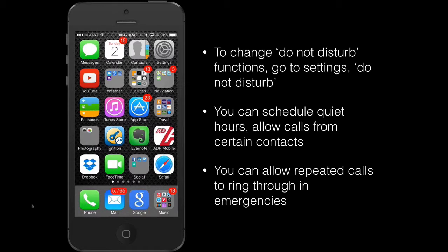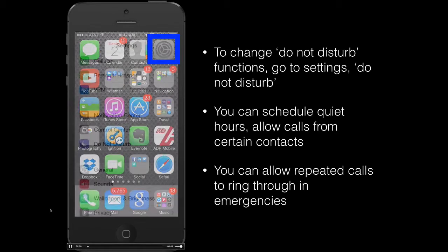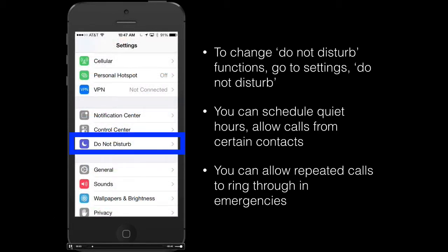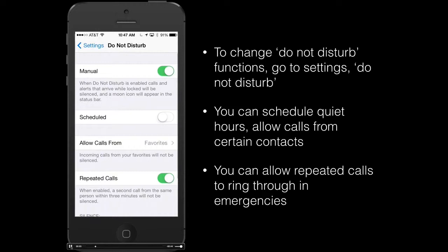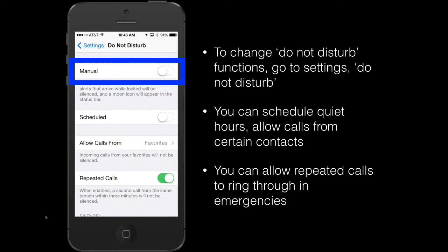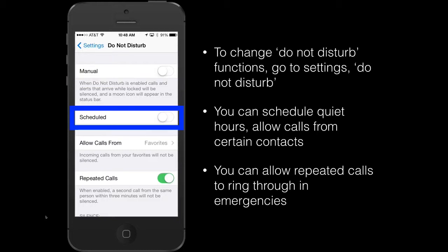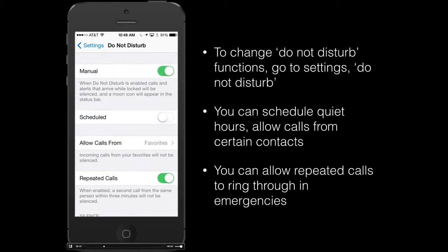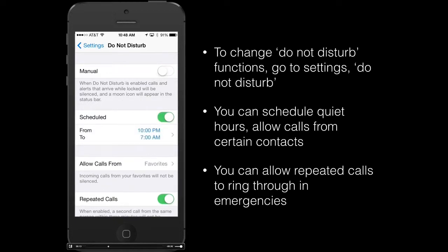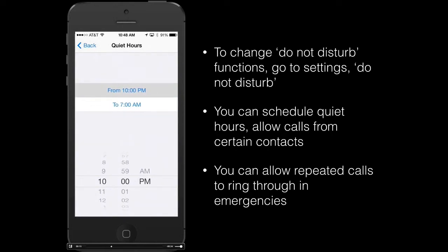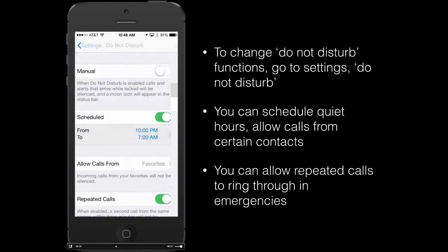To change the features of the Do Not Disturb function, go to Settings and then select Do Not Disturb. The first option lets you choose between a manual Do Not Disturb — where you turn it on and off from the Control Center — or you can actually schedule it for when you're in a meeting or want to go to sleep, selecting times so it can run daily.